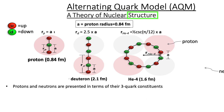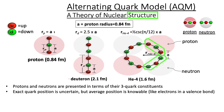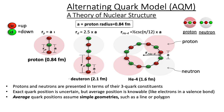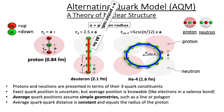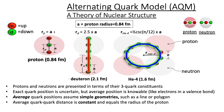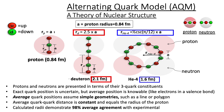Protons and neutrons are presented in terms of their three quark constituents. Exact quark positions are uncertain, but average positions are knowable. Average quark positions assume simple geometries such as a line or a polygon. Average quark-to-quark distance is constant and equals the radius of the proton, and calculated radii demonstrate 98% agreement with experimental values.